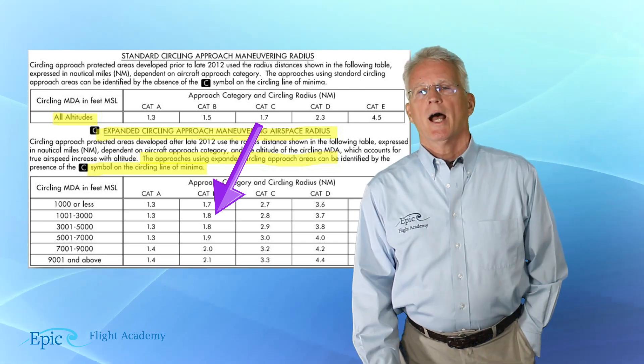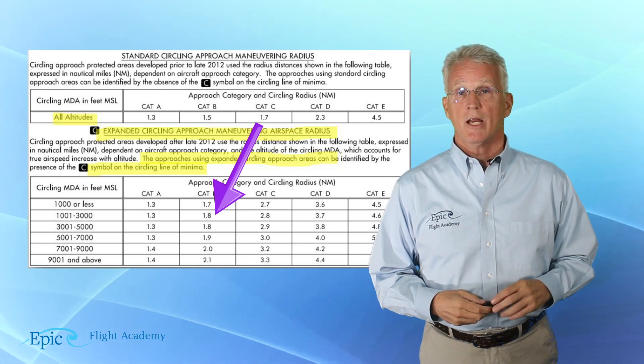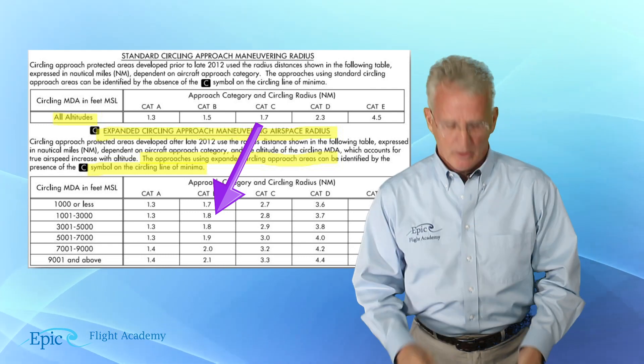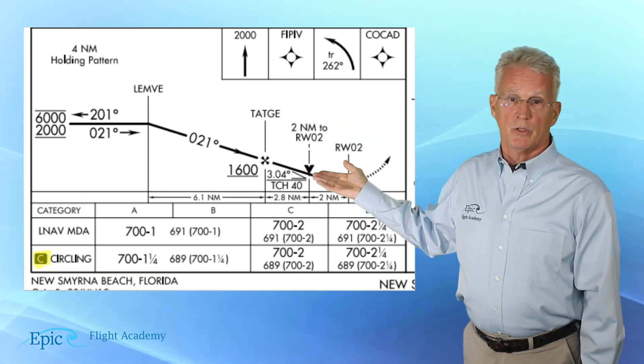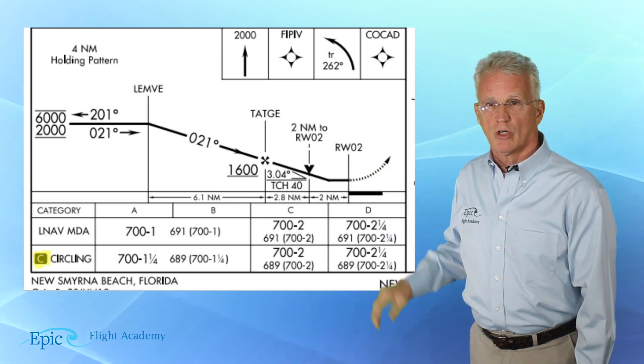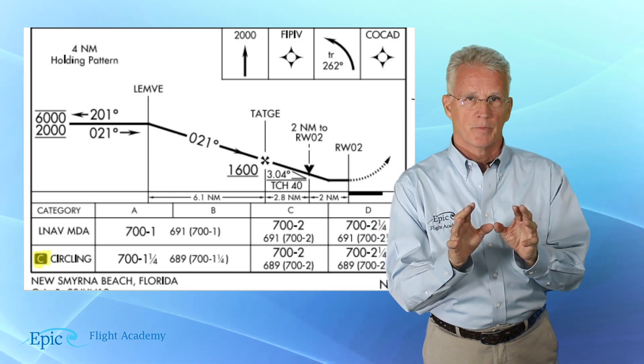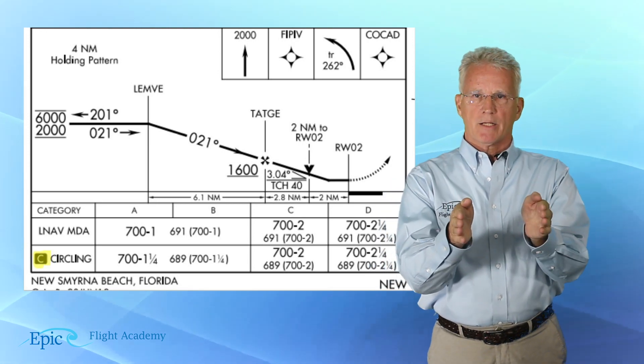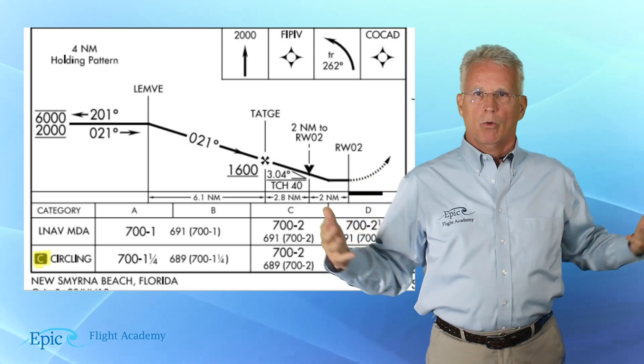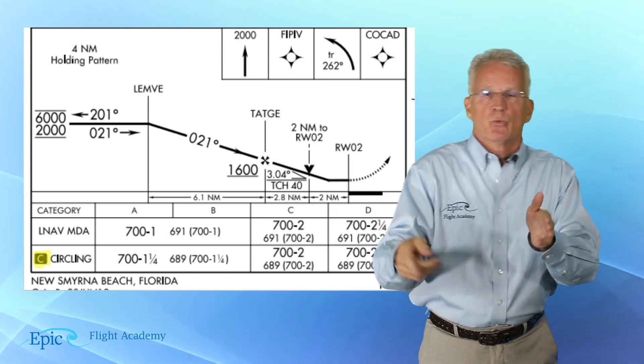So here's a question. How do I know if this airport has non-standard or expanded circling minimum? Now the answer to that is simple. Take a look at this graphic. And this is from New Smyrna Beach, Florida. And in the left-hand column, you see where it says circling. These are the circling minima for this approach. And we've highlighted in yellow what we call the negative C. Now by that, we mean it's a black box with the letter C shown in negative or in white. And this comes from the idea of old photo negatives. And that's where that term negative C comes from. But really, it's a black box with the white C inside of it.